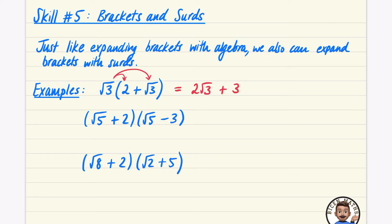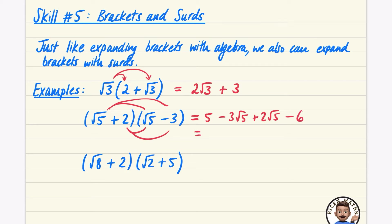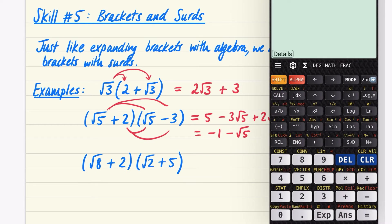For double brackets you may have different methods — FOIL, the grid method, whatever you prefer. I'll use the FOIL method here. Root five times root five is five; root five times minus three is minus three root five; two times root five is plus two root five; two times minus three is minus six. Collecting like terms: five subtract six is minus one, and minus three root five plus two root five is minus root five. You can leave the answer as minus root five minus one.